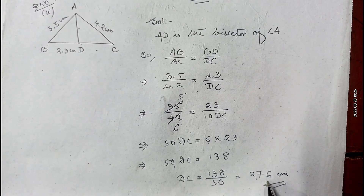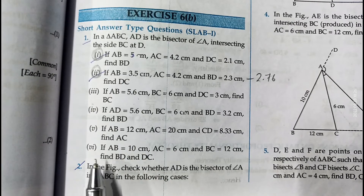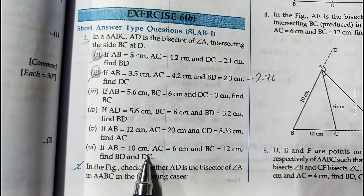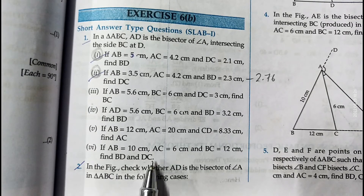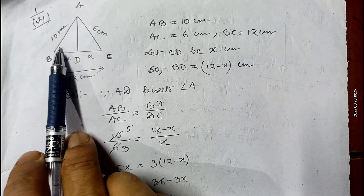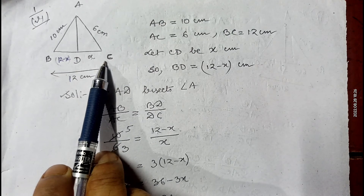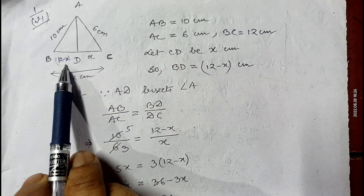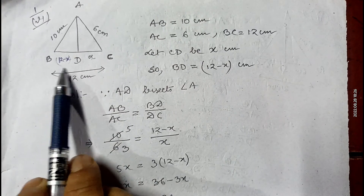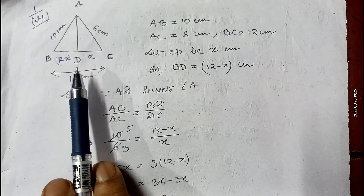Though all the sums of question number 1 are of the same type, let me show part 6. Here it is given AB equals 10 cm, AC equals 6 cm, and BC equals 12 cm; find BD and DC. We let CD equal x, so BD will be 12 minus x since the full length is 12. Since AD is the bisector of angle BAC, we can write AB by AC equals BD by CD.